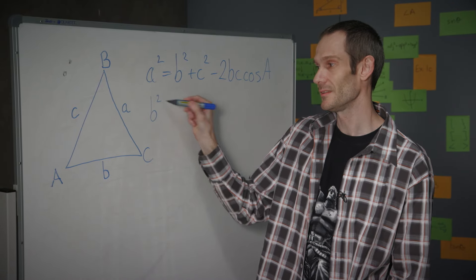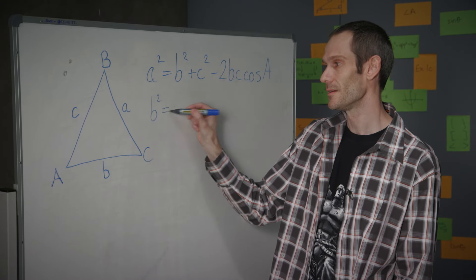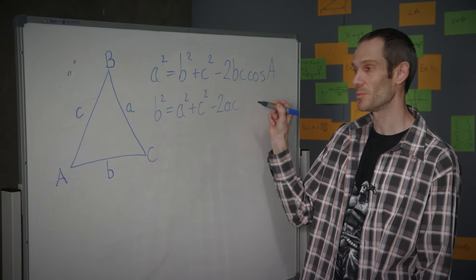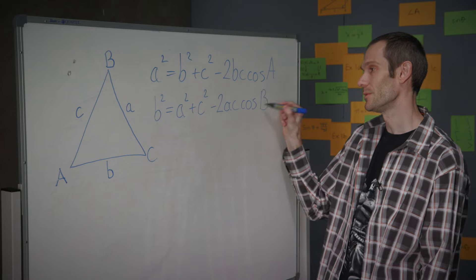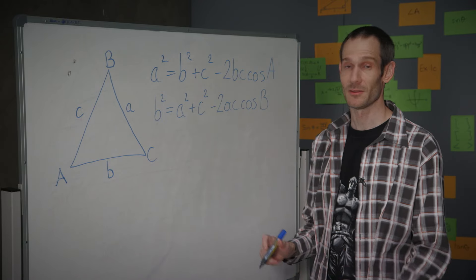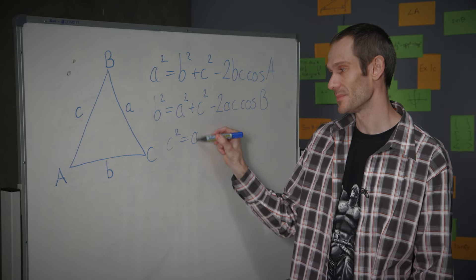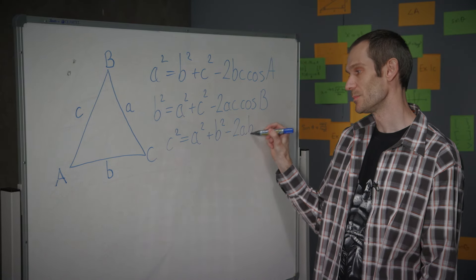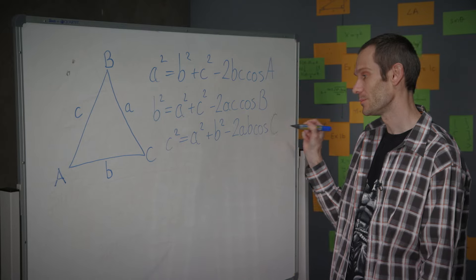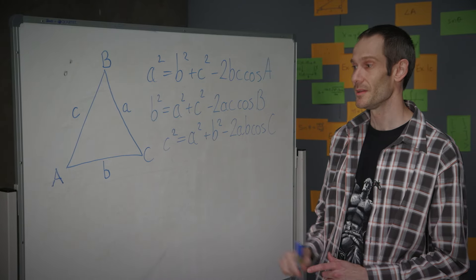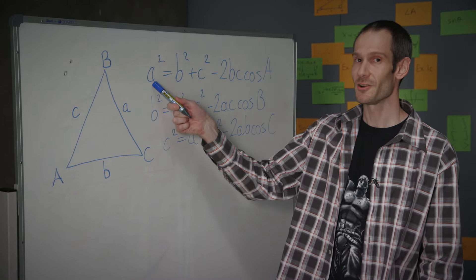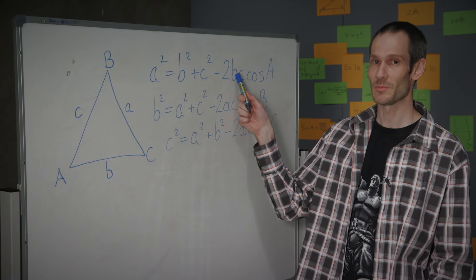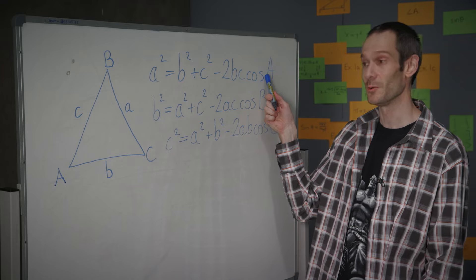The cosine rule also tells us that side length B squared must equal the sum of A squared plus C squared, take away twice their product, multiplied by the cosine of the angle between those two sides. And it also tells us that C squared must equal A squared plus B squared, subtract away twice their product, multiplied by the cosine of the angle between those two sides. In summary, a side of a triangle squared equals the sum of the two other sides squared, subtract away twice their product, multiplied by the cosine of the angle between the two.